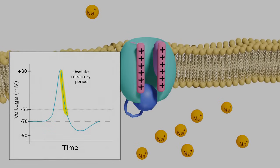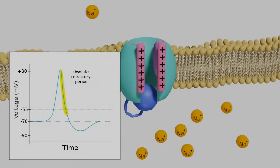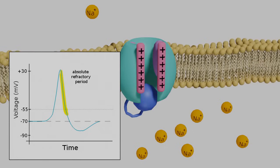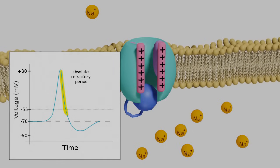The absolute refractory period is the time in which it's impossible to fire another action potential, because the inactivation gate is engaged. It doesn't matter how much stimulation the neuron receives, the channel will not open.